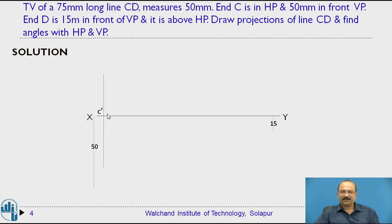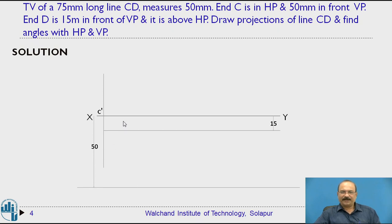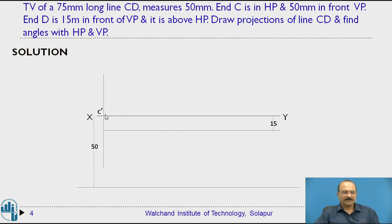All front view notations are written with a dash mark; all top view notations are written without a dash mark. Point D is 15 mm in front of VP, so we measure 15 mm from the XY line and draw the locus line there. We now have the 50 mm locus and 15 mm locus drawn, with point C dash located on the XY line.